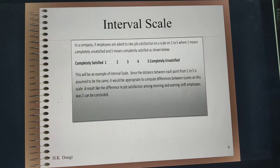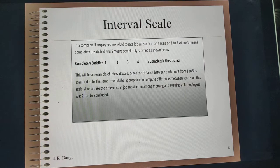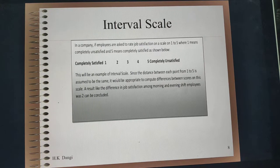In ordinal measurement you have some order or priority but you do not know whether the difference between rank one and two is the same as rank two and three. But if you make these differences equal then it becomes interval data. The best example of interval data is the temperature scale — when you do not have an absolute zero it is an interval scale. Similarly, asking employees how satisfied they are on a scale of one to five is interval data.